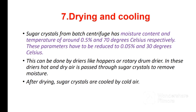The seventh stage of sugarcane processing is drying and cooling. Sugar crystals from the centrifuge have a moisture content and temperature of around 0.5% and 70 degrees Celsius respectively. These parameters have to be reduced to 0.05% and 30 degrees Celsius in order to avoid spoilage of sugar produced. This can be done by dryers like conveyors or a rotary drum dryer. In these dryers, hot and dry air is passed through sugar crystals to remove moisture. After drying, sugar crystals are cooled by cold air.